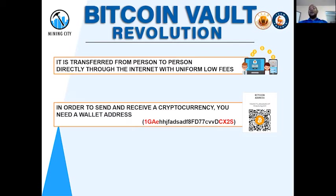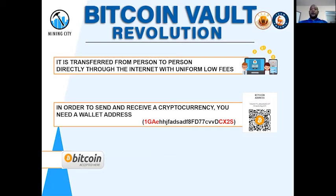Every cryptocurrency you send must go to a wallet address. A wallet address is those long numbers mixed together that you see on the screen. Usually they are hidden behind a barcode — when you take your phone and scan that barcode, it gives you the wallet address and also the amount of coins you need to send to whoever you are sending to.